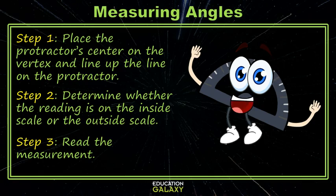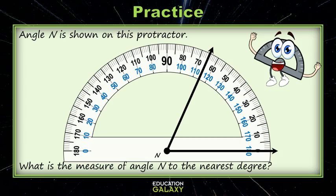Let's try some practice problems now. Angle n is shown on this protractor. What is the measure of angle n to the nearest degree? Well, step one, place the protractor center on the vertex and line up on the protractor. Check.